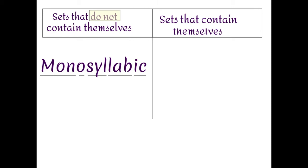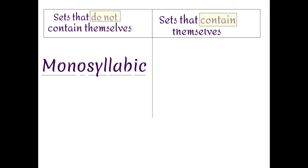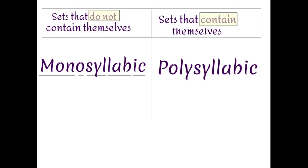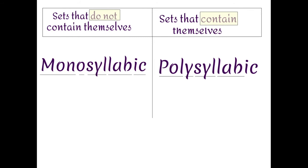Similarly, a good analogy for a type of sets that contain themselves would be English words that describe themselves, like the word polysyllabic, which is actually composed of more than one syllable.